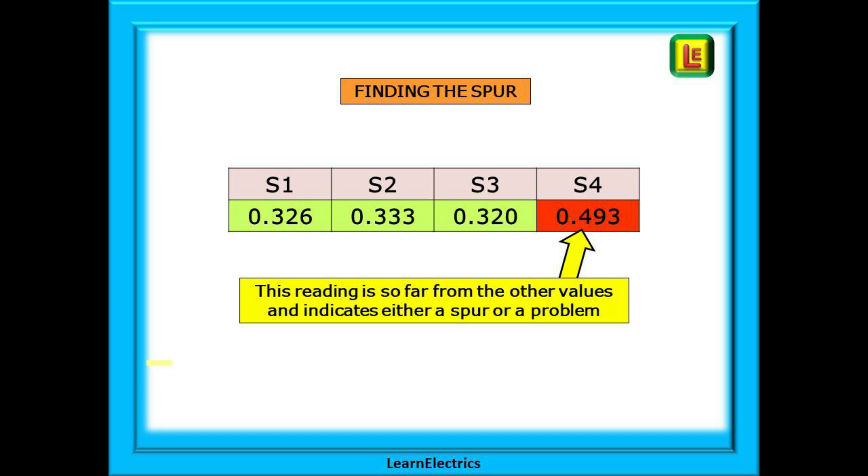But what has it done to the readings? If we measure with our test meter, we will find the readings pretty much the same as shown here, until we test at S4 when the resistance suddenly jumps through the roof. This reading is so far from the other values and indicates either a spur or a problem. Removing the socket cover at S2 will tell us the answer. If there are three twin and earth cables to the S2 socket, then S4 is a spur.